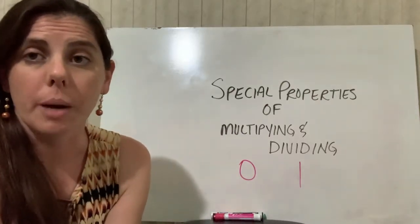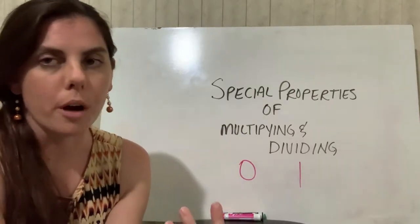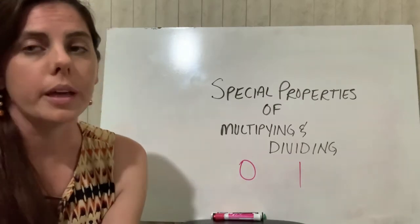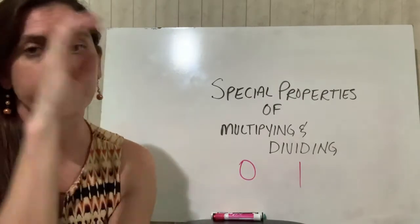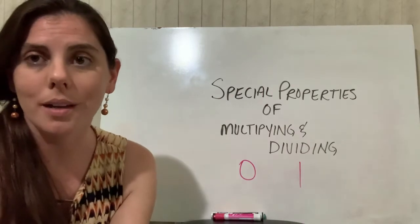Our last video for chapter 1 is going to deal with some special properties with multiplication and division that we just want to make sure that we keep in mind, with the numbers 1 and 0.